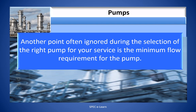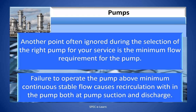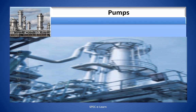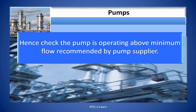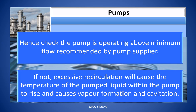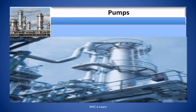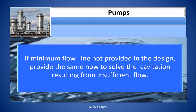Another point often ignored during pump selection is the minimum flow requirement. Failure to operate the pump above the minimum continuous stable flow causes recirculation within the pump at both suction and discharge. Hence, check that the pump is operating above the minimum flow recommended by the pump supplier. If not, excess recirculation will cause the temperature of the pumped liquid within the pump to rise, causing vapor formation and cavitation. If a minimum flow line is not provided in the design, provide one now to solve the cavitation resulting from insufficient flow and recirculation.